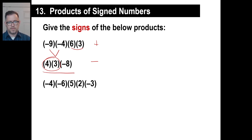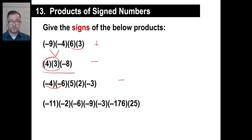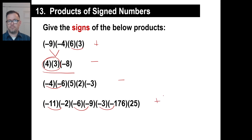Give the signs of these products. First: six times three — that's positive, piece of cake. Then a negative times a negative — also positive. An odd number of negative factors: three negatives — two cancel each other out to give positive, but there's one leftover negative, so the product is negative. Another example with six negative factors — that's three pairs of negatives, an even number, so they all cancel and the product is positive.